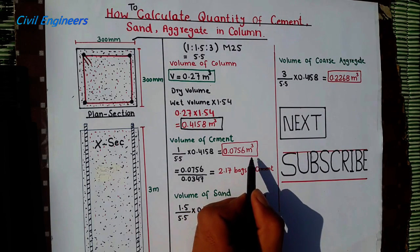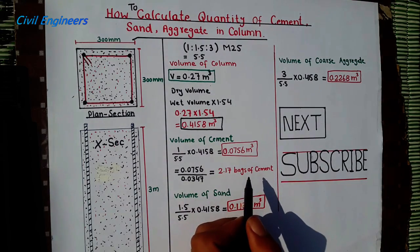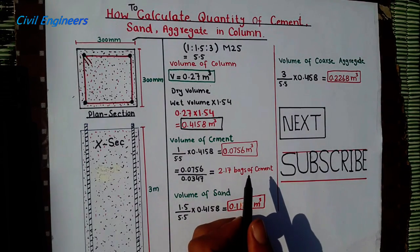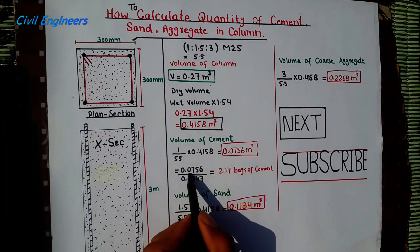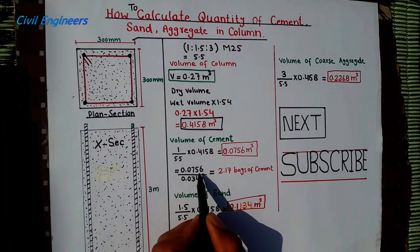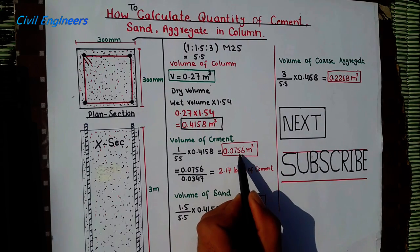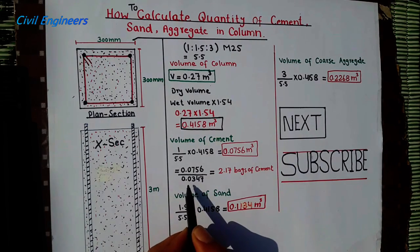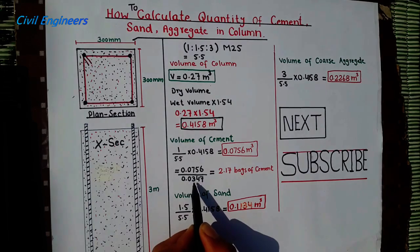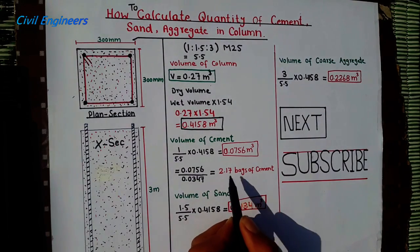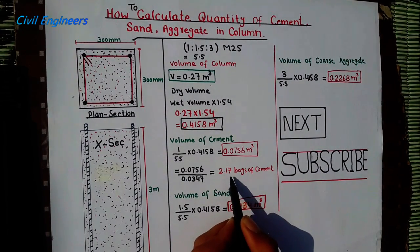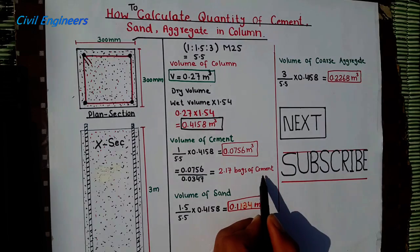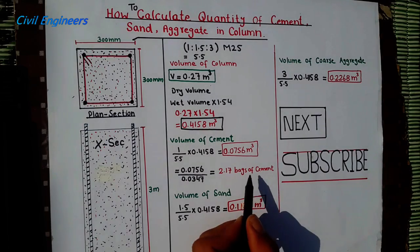Now I want to convert the cement volume to bags. So 0.0756 (volume of cement) divided by 0.0347 (volume of one bag in meter cube) equals 2.17 bags of cement required for this column with M25 ratio.